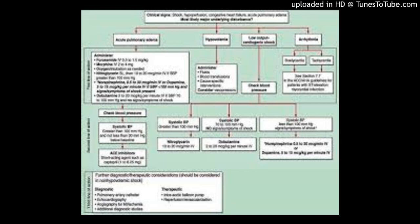If sarcoidosis involves the eye, you get uveitis. If it involves the skin, you get cutaneous nodules. It can involve the salivary glands and lacrimal glands, mimicking Sjogren's syndrome — another classic knee-jerk exam trap. They expect you to jump for Sjogren's, but they're actually talking about sarcoidosis. The classic symptoms are dry mouth and dry eyes with increased risk of dental caries. A biopsy showing non-caseating granulomas with those symptoms is classic for sarcoidosis. Almost any tissue can be involved.